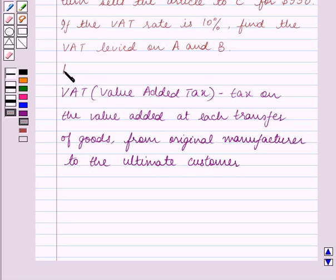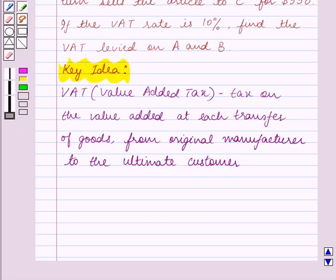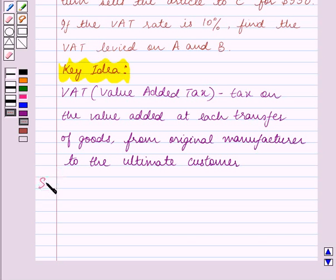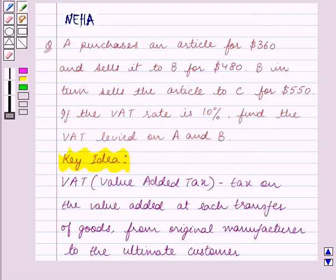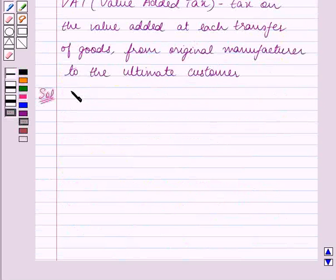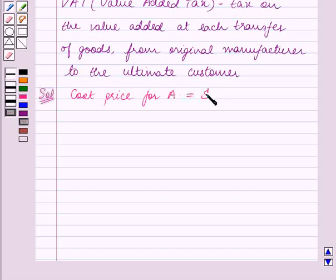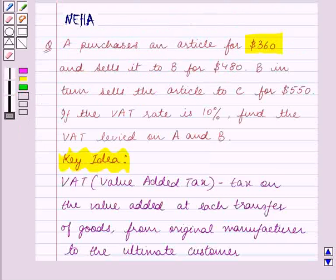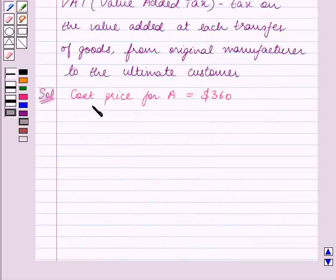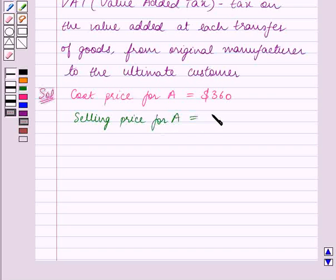This is the key idea for this question. Using this key idea, we will solve the question. Let's start the solution now. We are given that A purchases an article for $360, so cost price for A equals $360. Also, A sells it to B for $480, so selling price for A equals $480.